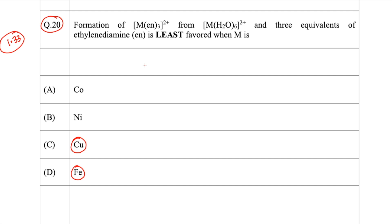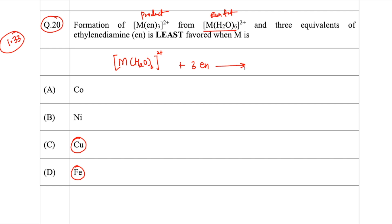Let's look at the question and see why the answer has been changed. The question says: the formation of [M(en)₃]²⁺ from [M(H₂O)₆]²⁺ and 3 equivalents of ethylenediamine (en) is least favored when M is — so [M(H₂O)₆]²⁺ is the reactant, and when it reacts with 3 moles of ethylenediamine, 6 moles of water are removed and you get [M(en)₃]²⁺.